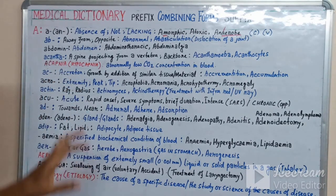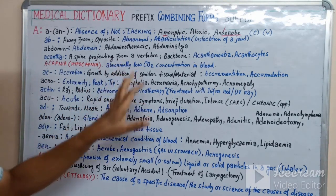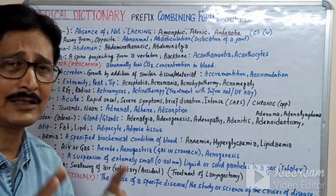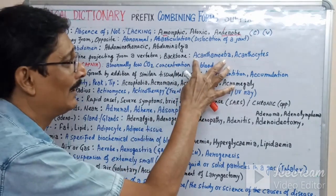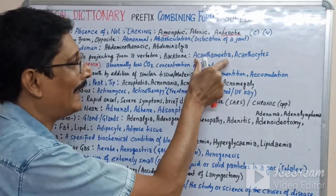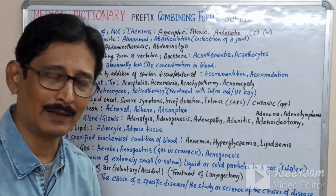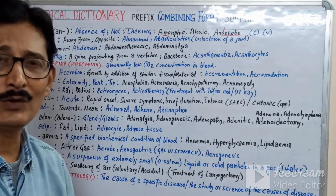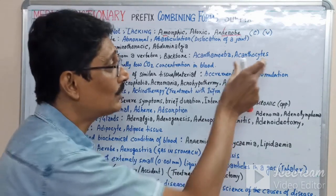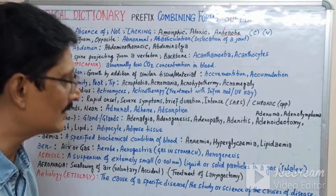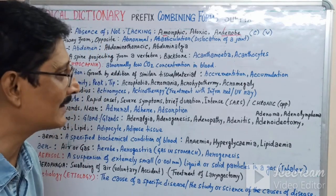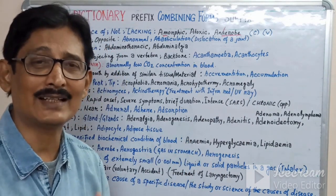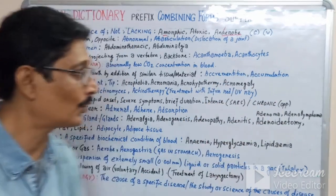'Acantha' means a spine-like projection from a vertebra or backbone. For example, 'Acanthamoeba' is an amoeba with spiky projections — so you can easily describe its morphology. 'Acanthocytes' — 'cyte' means cell — so acanthocytes are red blood cells (RBCs) that have spike-like projections. These spikes are different from coronavirus spikes; they are structural projections on the cell surface.